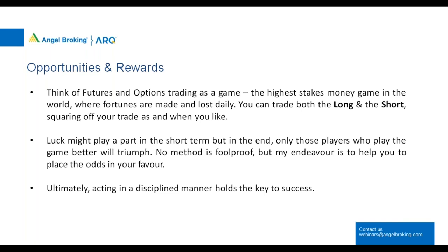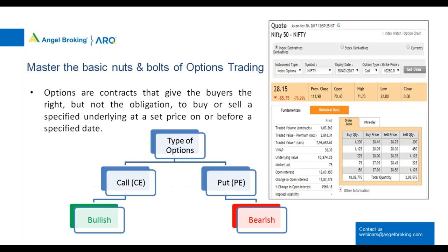Looking at the basic nuts and bolts of options trading: options are contracts that give the buyer the right but not the obligation to buy or sell a specified underlying at a set price on or before a specified date. If you're a buyer of options, you have the right but not the obligation. But if you're a seller of options, you are definitely obligated.